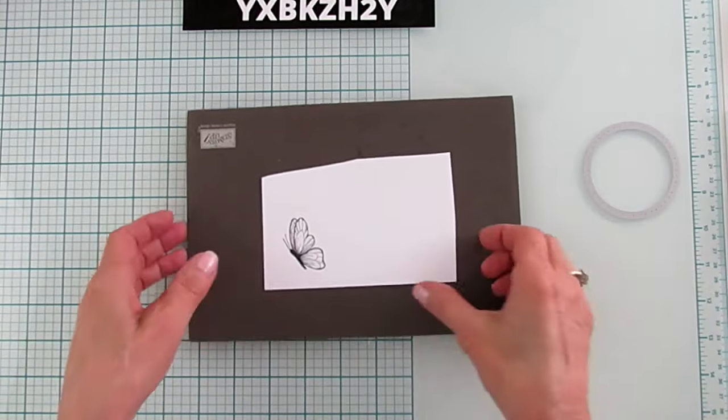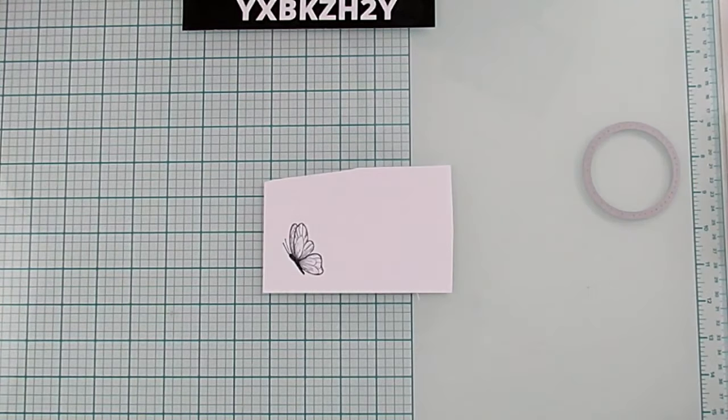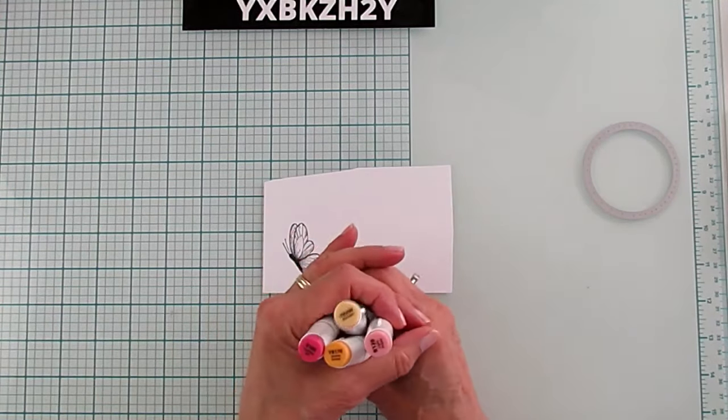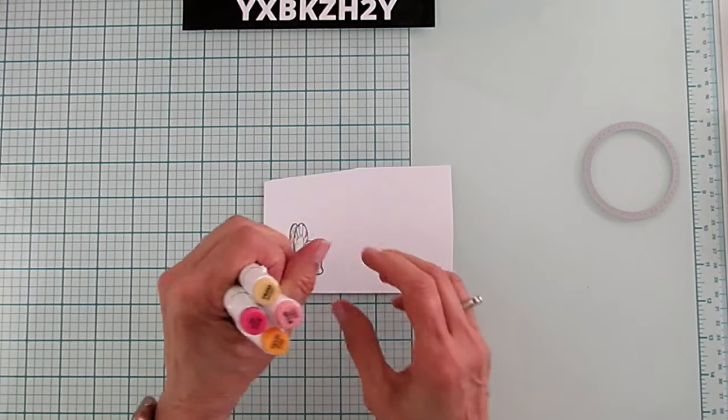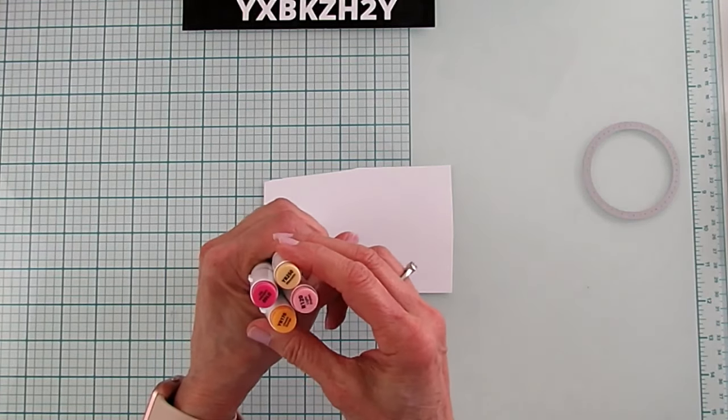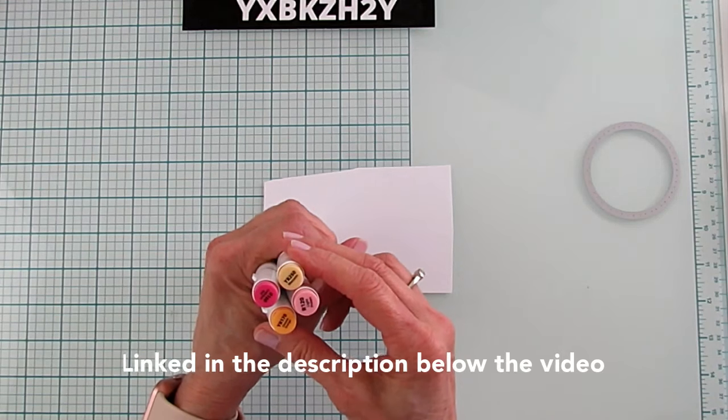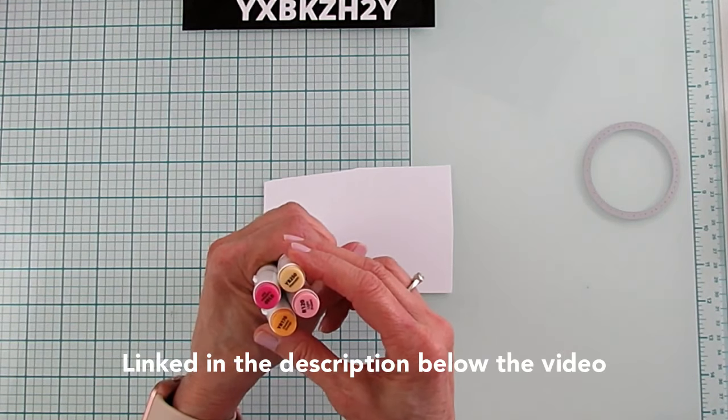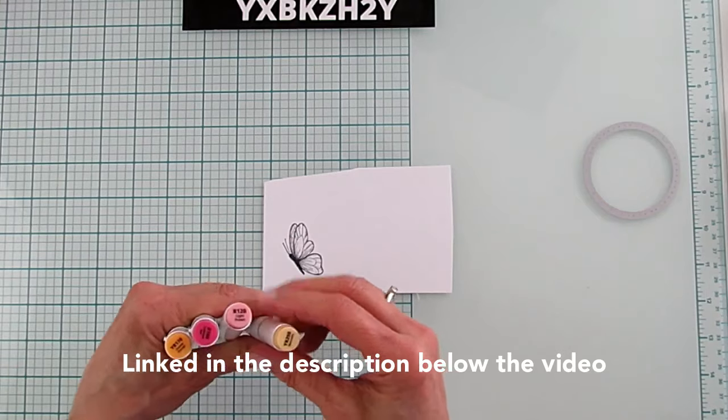So let's go ahead and remove the mat. And we're going to color. And for those of you who have gotten these markers, because I know some of you have gotten them, I'm using R160, YR170, R120, YR250. And that is it on these.